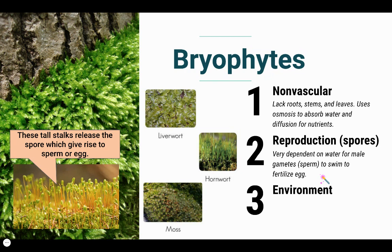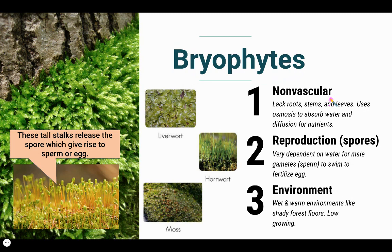Bryophytes are very dependent on water because their sperm needs to swim and fertilize an egg to produce the next generation. You're going to find bryophytes in very wet and warm environments like shady forest floors. They are really short, typically not reaching more than 10 centimeters, because they are non-vascular plants. These are the most closely related to the green algae ancestors.